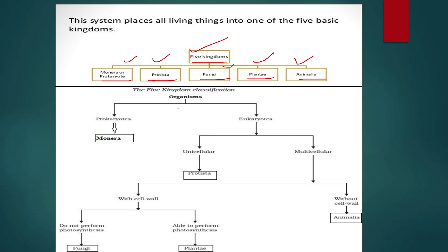Whittaker classified organisms based on their characteristics. If an organism has the characteristics of prokaryotes, it is placed in the prokaryotic section, and all prokaryotic organisms are placed in the Monera kingdom. If organisms have the characteristics of eukaryotes, they are placed in the eukaryotic section. Monera is the one kingdom containing all prokaryotes.